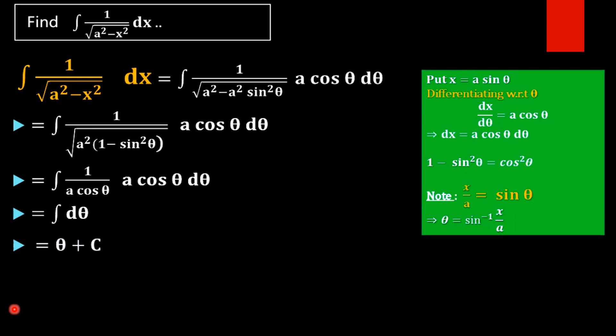So we get our result in terms of theta but we need it in terms of x. So what is theta? That is x equal to a sin theta, then sin theta equal to x by a, then theta equal to sin inverse of x by a. So which is equal to sin inverse of x by a plus c.